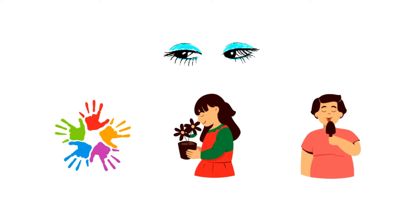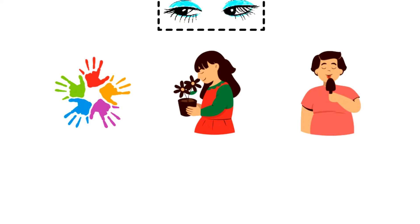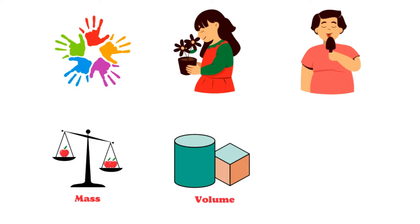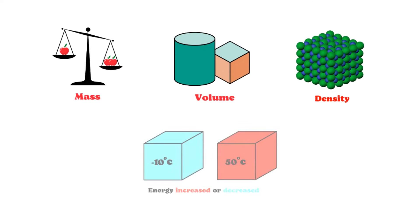Generally, we can only observe the qualities of an object, like its color, smell, taste, hardness, etc., but we cannot measure them. So the observations we make for them are qualitative observations. On the other hand, the mass and volume of an object, density of matter, amount of energy increased or decreased, etc. can be measured along with observations.